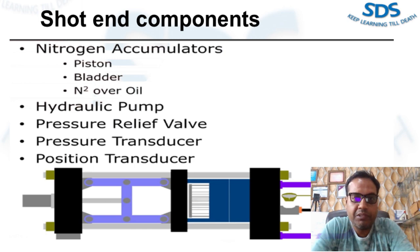Most accumulators have a piston to separate the nitrogen from the hydraulic fluids. Some have bladders to contain the hydraulic fluid in the accumulator. Some have nitrogen separating from the hydraulic fluid.